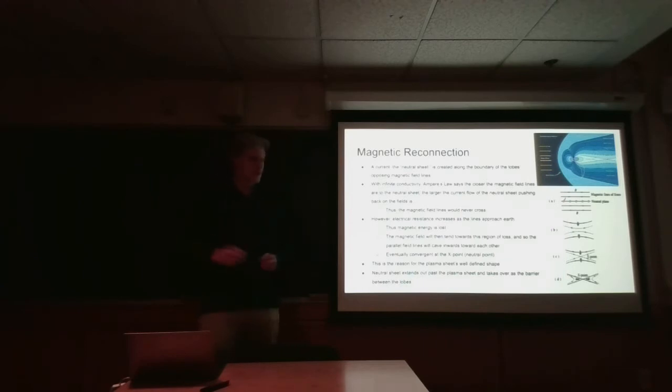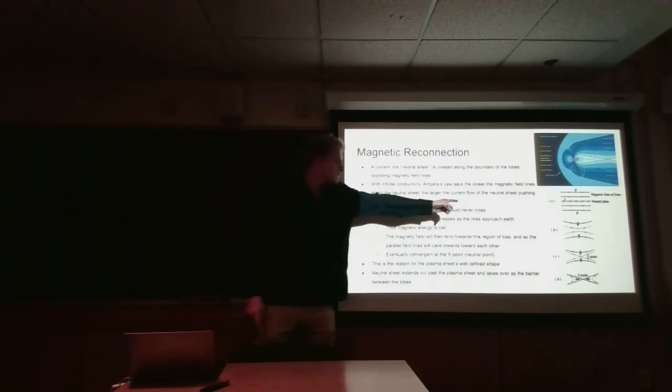And thus, the magnetic fields will tend toward this region of loss, as you can see in this diagram here, eventually converging at the X point in this diagram, or the neutral point in the top diagram.